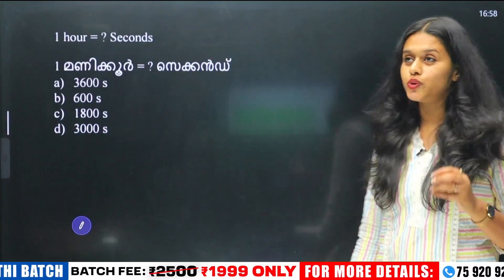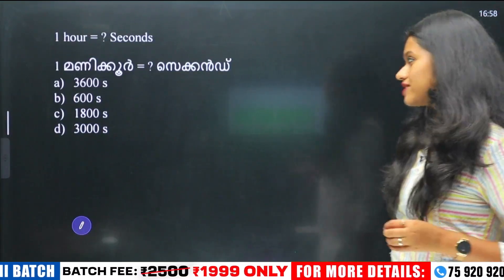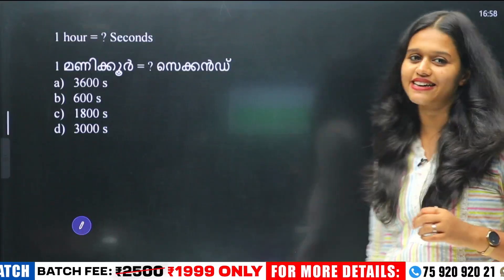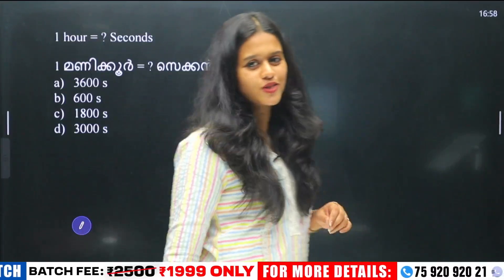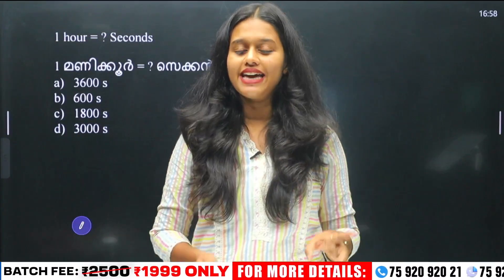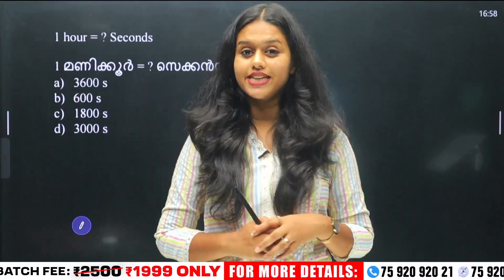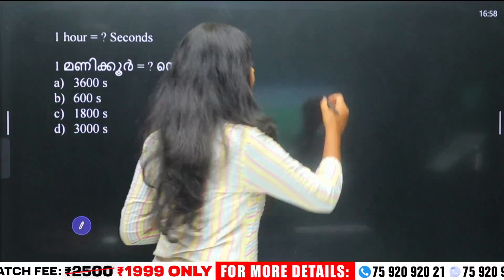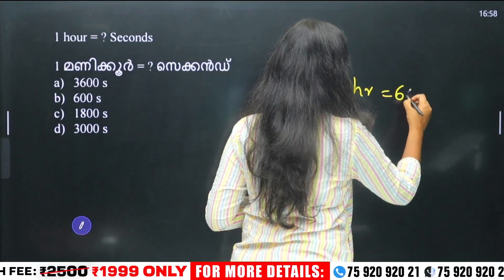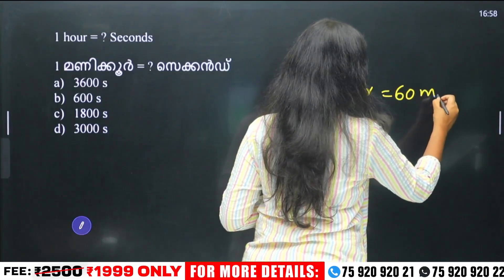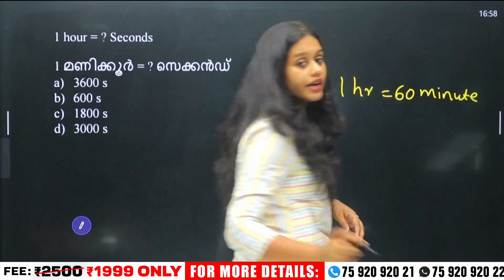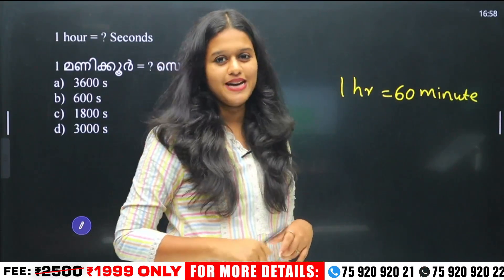First question: 1 hour is equal to how many seconds? How do we solve that? 1 hour is equal to 60 minutes. So, 60 minutes is equal to 1 hour.